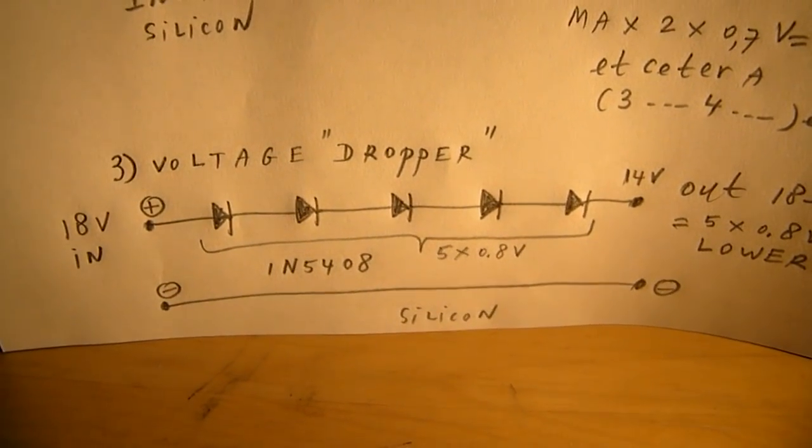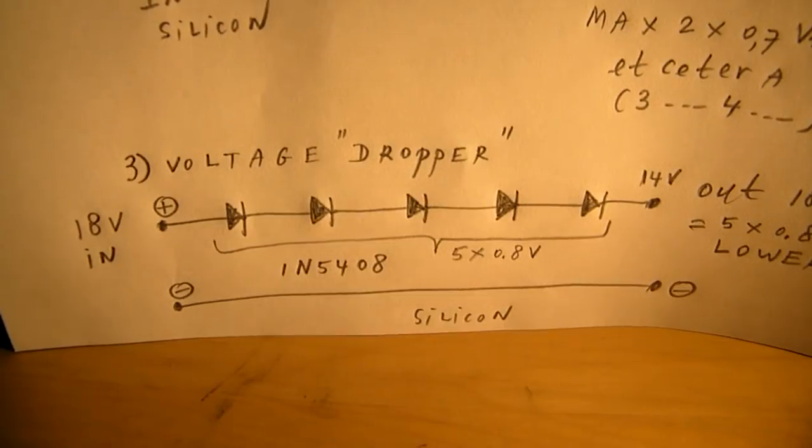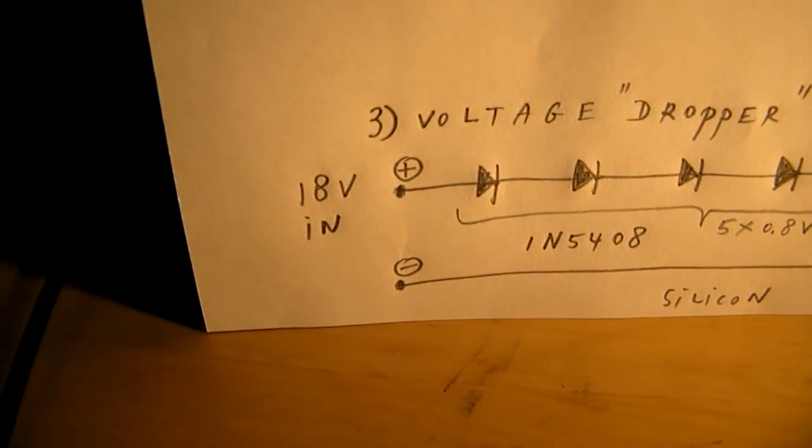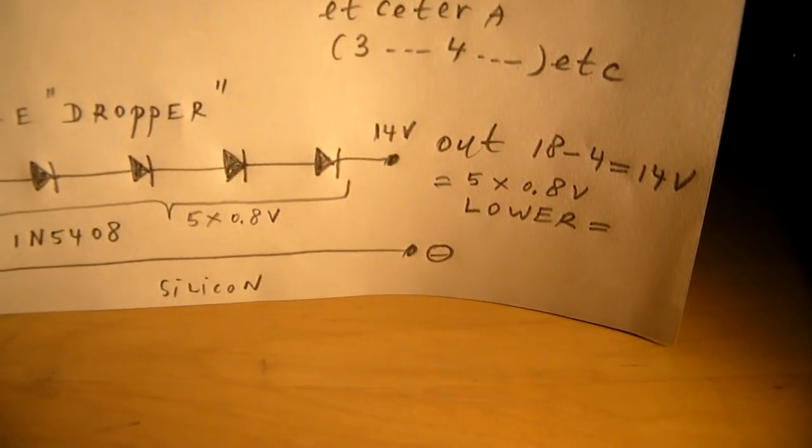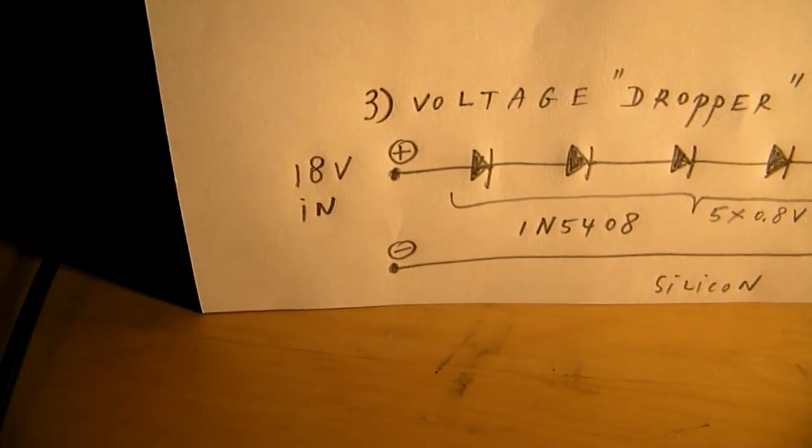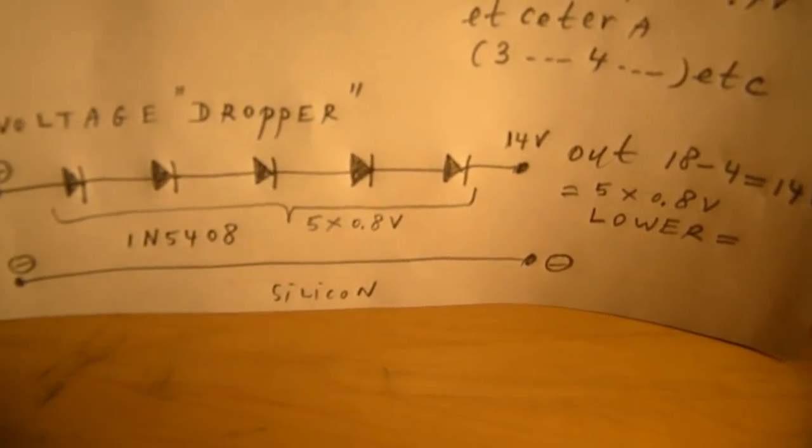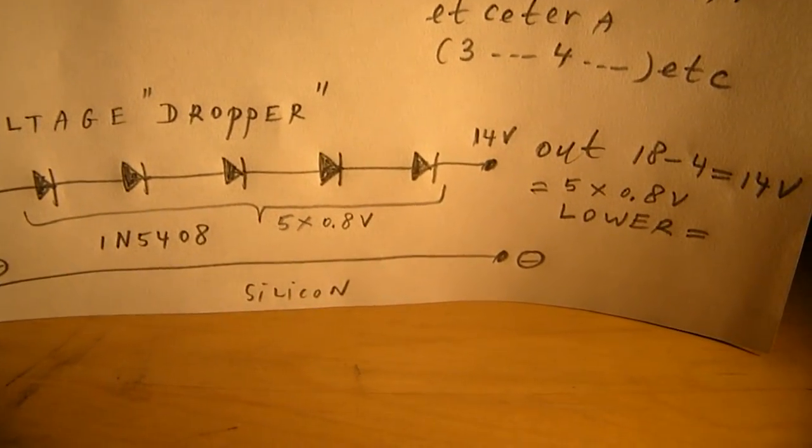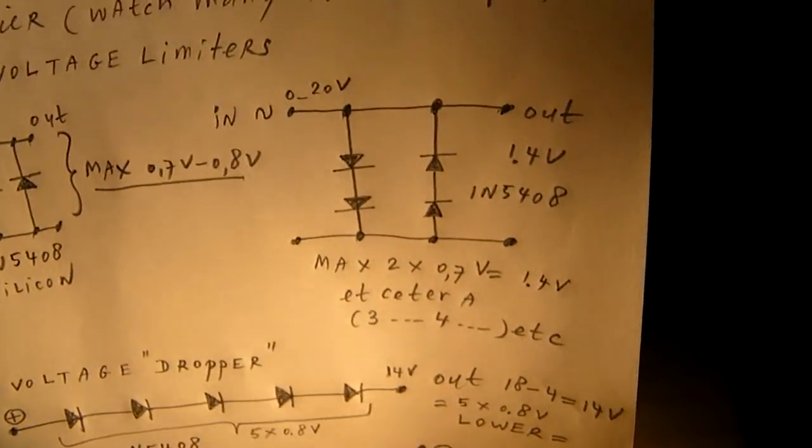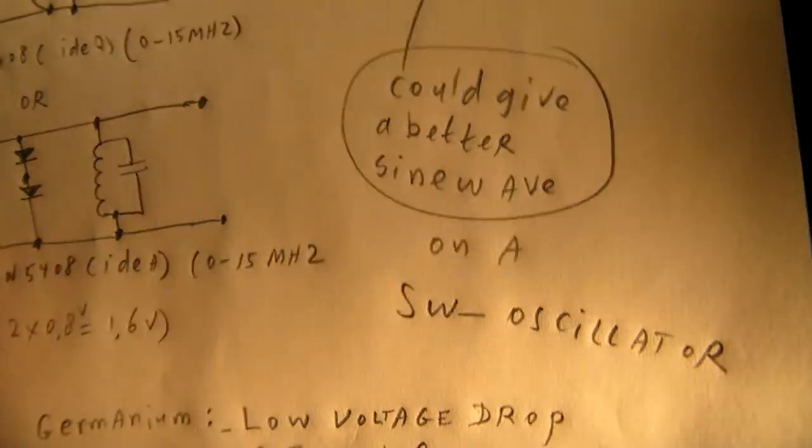So the most simple circuit to drop a voltage from say 18 volts to 14 volts out, or 12 volts to 4 volts lower, or whatever. 20 volts to 16 volts. Very simple and it always works. Use a sturdy diode for that application.